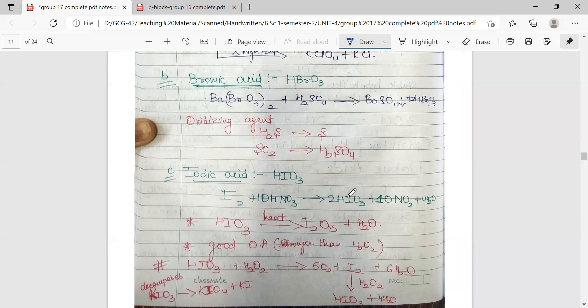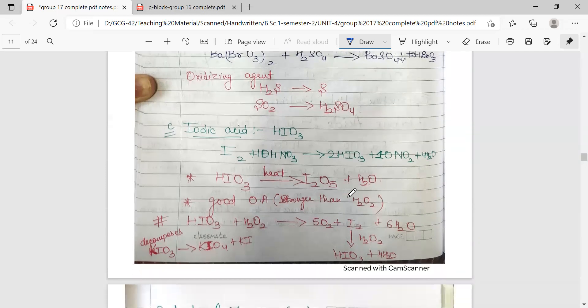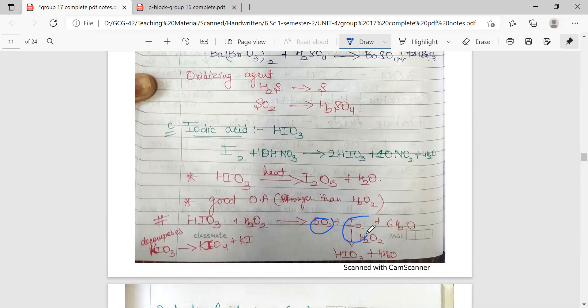These oxoacids, upon removal of water, give their corresponding anhydrides — for example, HIO3 has the anhydride I2O5. Iodic acid is a good oxidizing agent, stronger than H2O2. It reacts with H2O2 to release oxygen and I2 along with water. I2 further reacts with H2O2 to regenerate HIO3.